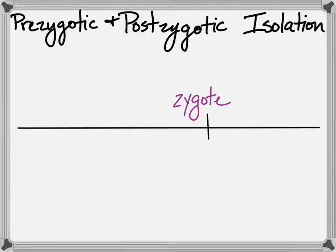It's hard to talk about speciation without talking about reproductive isolation, and sometimes that reproductive isolation gets broken down into prezygotic and postzygotic isolating mechanisms. It's all about the zygote — whether or not this form of isolation prevents a zygote from forming, or does some sort of prevention of future generations after the zygote.